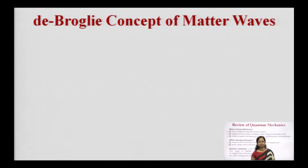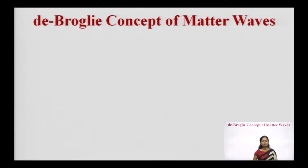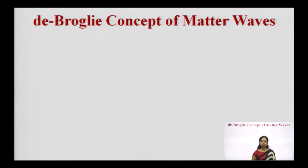There are three different concepts to study in quantum mechanics. First is the de Broglie concept of matter waves. Second is the Heisenberg uncertainty principle. Third is the Schrödinger wave equation. Let us first understand the de Broglie concept of matter waves.